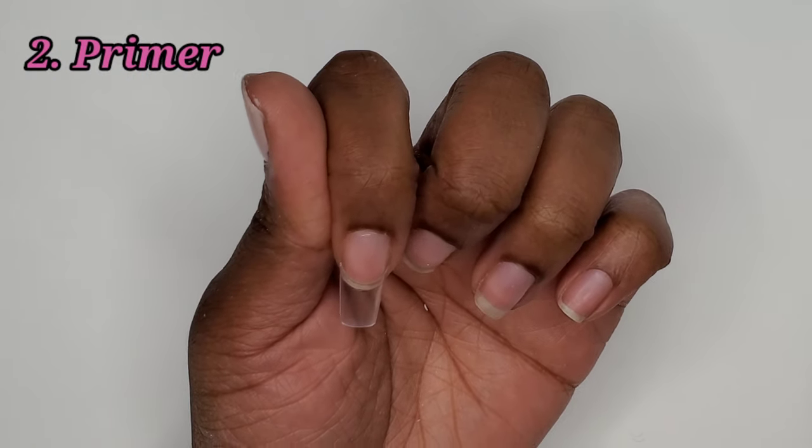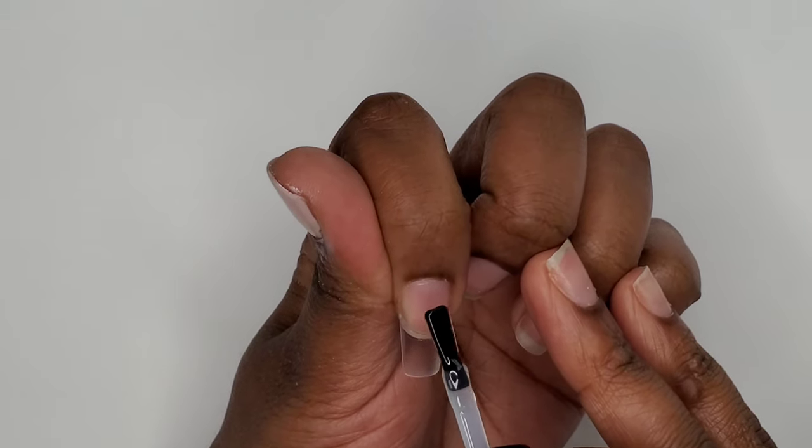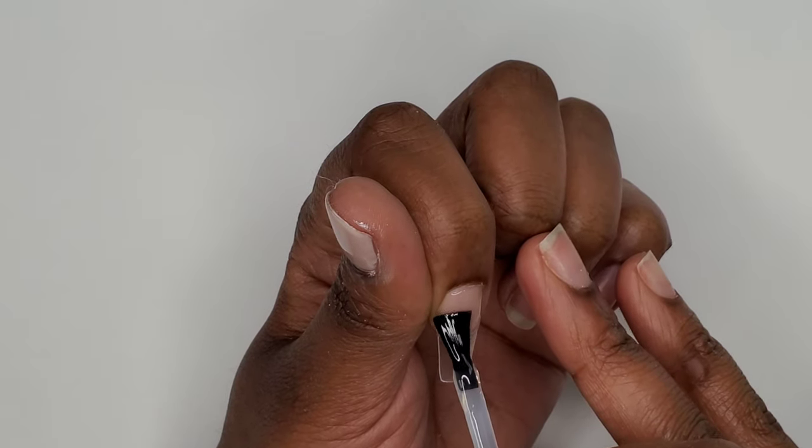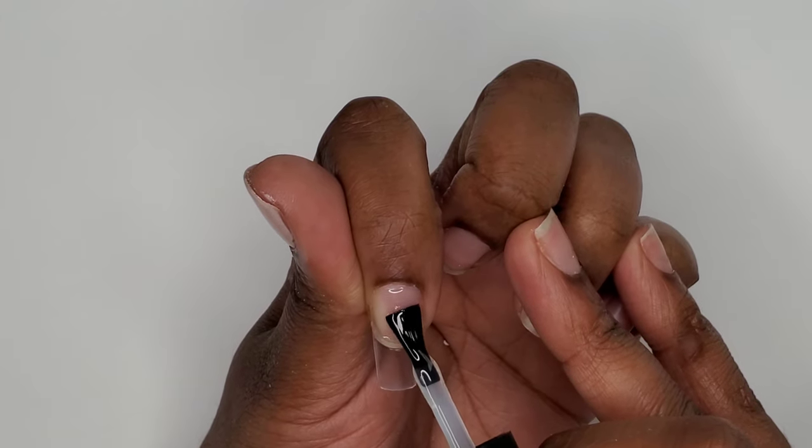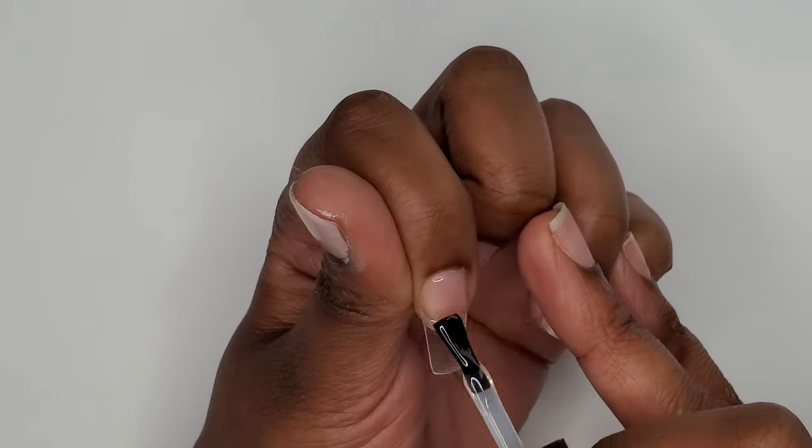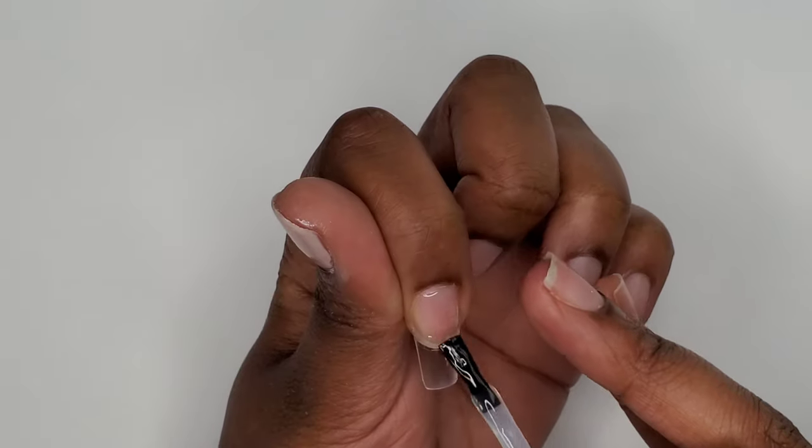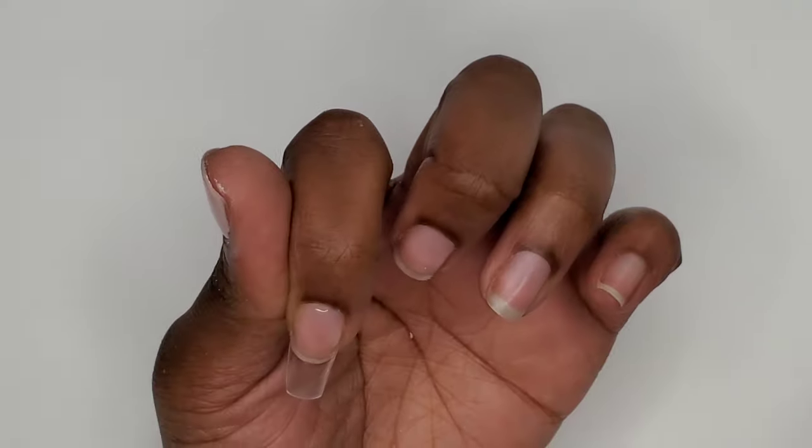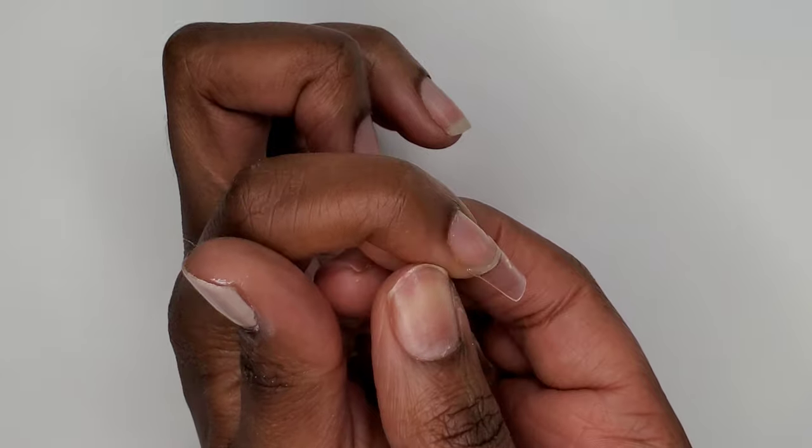The second way you can use this product is as a primer. To apply this as a primer, you just take a thin layer and scrub it into your natural nail. I like to bring the base coat down to my nail where the tip meets my natural nail. You can bring it all the way down to the tip if you choose. This has been the best way that I like to use rubber base coat because I've had a hard time finding a primer that actually works for me and that doesn't smell crazy. After you cure the base coat, then you can just go ahead and proceed with your regular acrylic application.